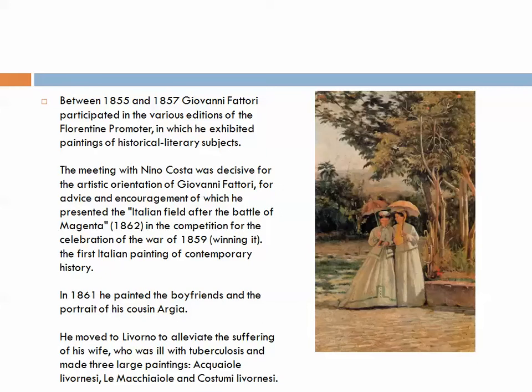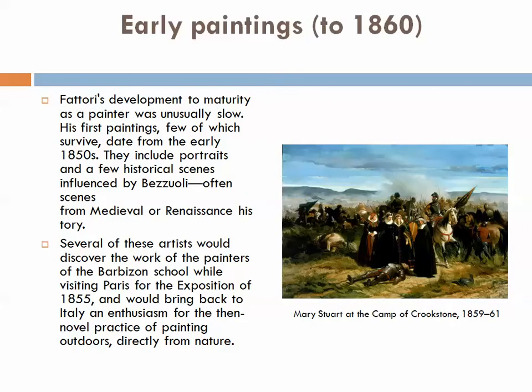He suffered a few personal blows around this time — for example, his wife was very ill with tuberculosis and passed away quite young. His maturity as an artist was unusually slow. His first paintings, of which not many have survived, date from the early 1850s and include portraits and a few historical scenes, very often influenced by his masters or the old academic arts, with a medieval or Renaissance sense to them.